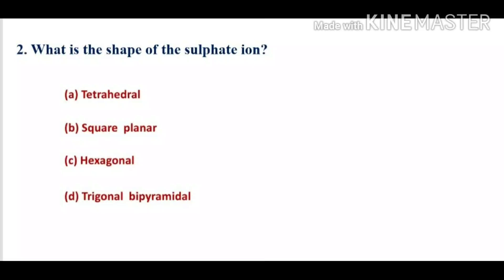Question number 2: What is the shape of the sulphate ion? The four options are A, tetrahedral; B, square planar; C, hexagonal; D, trigonal bipyramidal. The sulphate ion has four bond pairs and is SP3 hybridized, so its bond angle is 109.5 degrees. The molecule has a tetrahedral structure, so option A is the correct option.